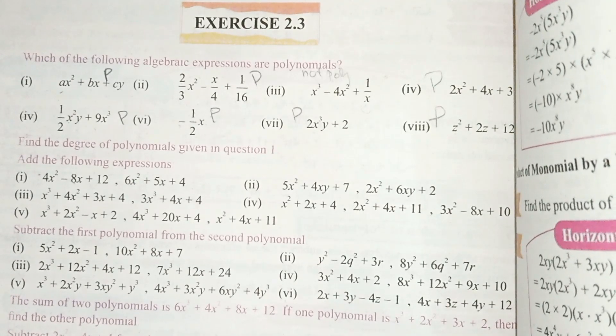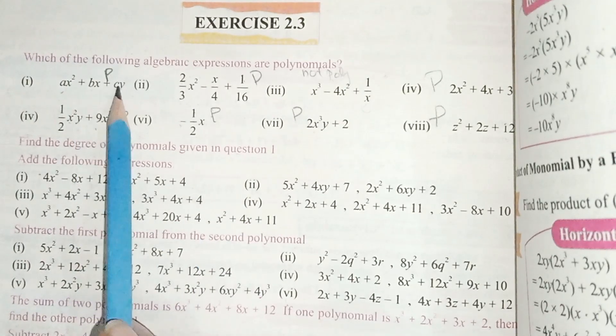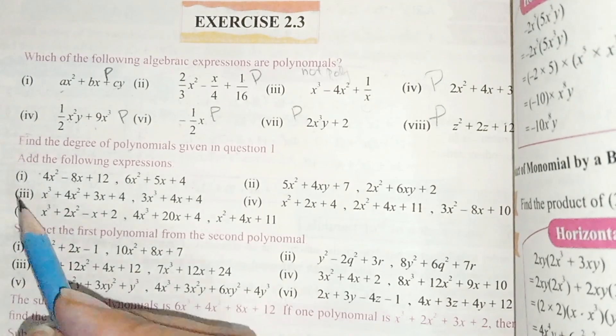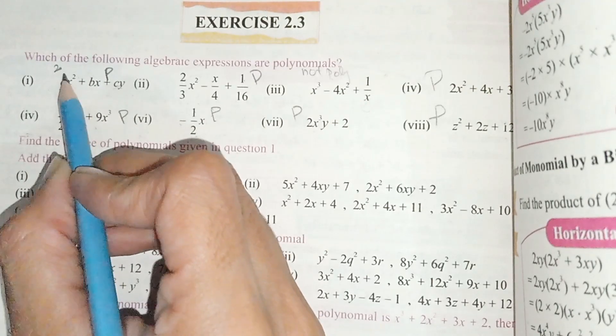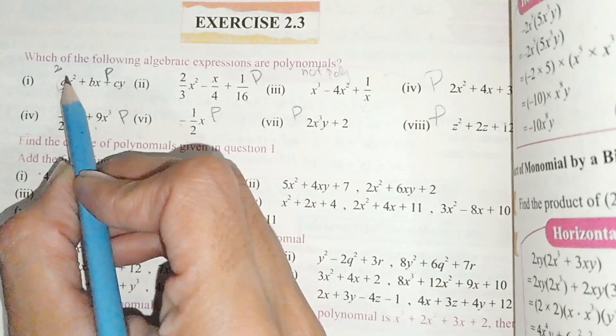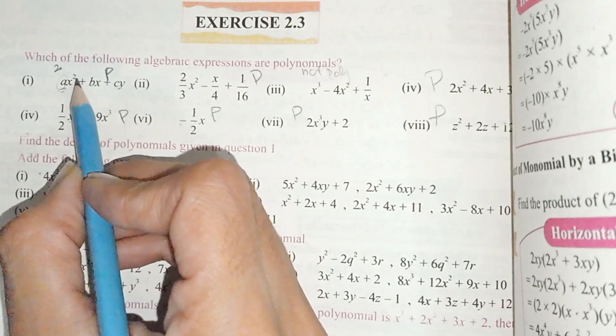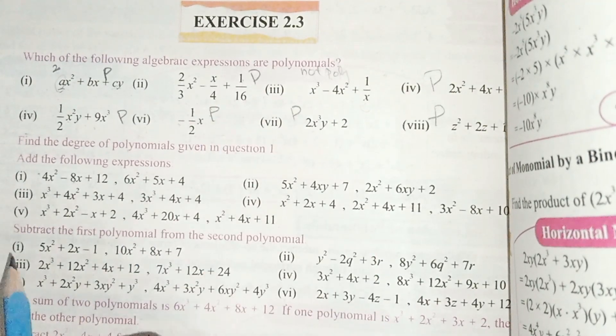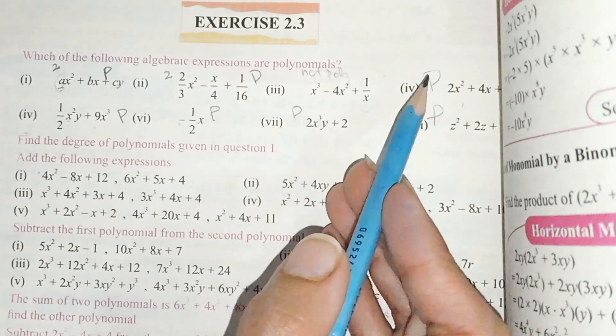Now the second part. Find the degree of polynomial given in question 1. We have to find the degree. The degree is the highest value, the highest power. The largest value of the exponent. So this polynomial has degree 2, which is the highest value we mentioned. This is the highest degree of the students.